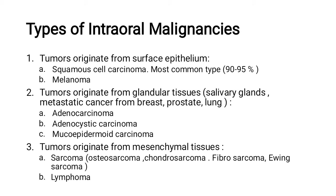Types of intraoral malignancies: Malignancies refer to the abnormal growth of cells. These may also include metastatic cancer from breast, prostate, and lung. Other types include adenocarcinoma, adenocystic carcinoma, and mucoepidermoid carcinoma. Tumors originating from mesenchymal tissue include sarcoma, osteosarcoma, chondrosarcoma, fibrosarcoma, Ewing sarcoma, and lymphoma.